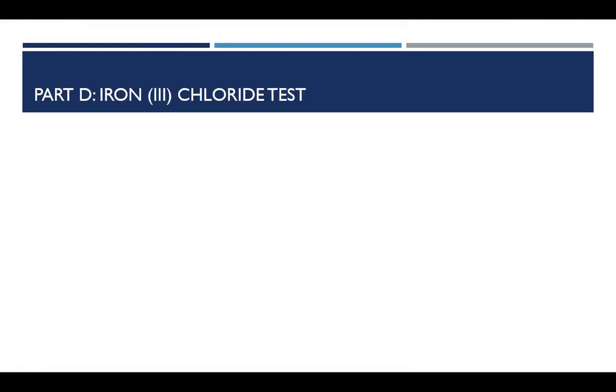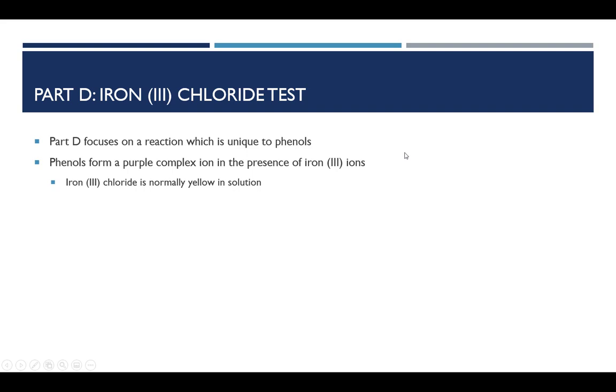Part D involves a test which is specific for identifying phenols, and that is the iron chloride test. Phenols form what is called a complex ion in the presence of iron 3+ ions. When iron 3+ is alone by itself, it should be yellow in solution.